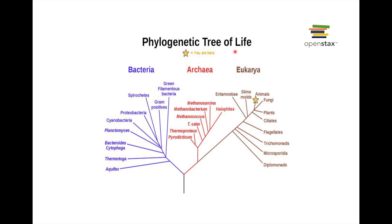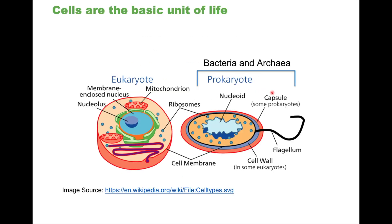Within each domain there are kingdoms — we are part of the animal kingdom. Cells are the basic units of life. Collectively, we call bacteria and archaea prokaryotes because they are much simpler than eukaryotes.